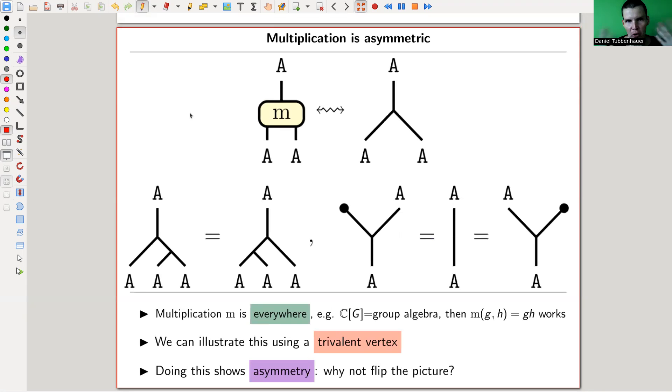So one of the most natural operations we all learn very early on is some form of multiplication. So kind of multiplication is seriously everywhere. Not just numbers, but whatever. My main example, the group ring of a group, where the multiplication is just multiplication in the group. And I would like to draw multiplication in the following way. So A is my underlying algebra. And I draw multiplication as this trivalent vertex with two inputs, let's say A and B, and one output, A times B.